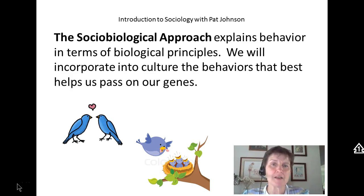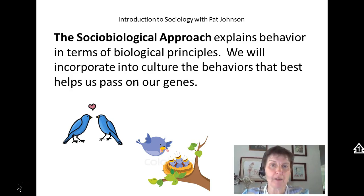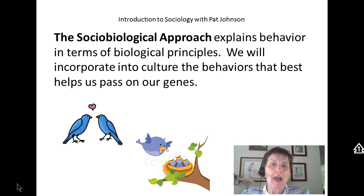I ask them to look at it from the sociobiological point of view. In other words, why would monogamy — birds not cheating on their bird partners — help them pass on their genetic code?